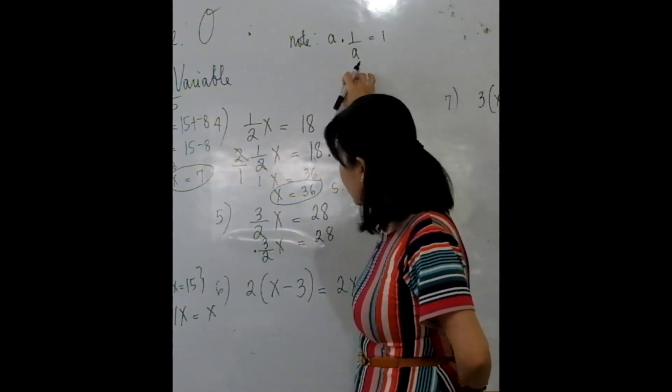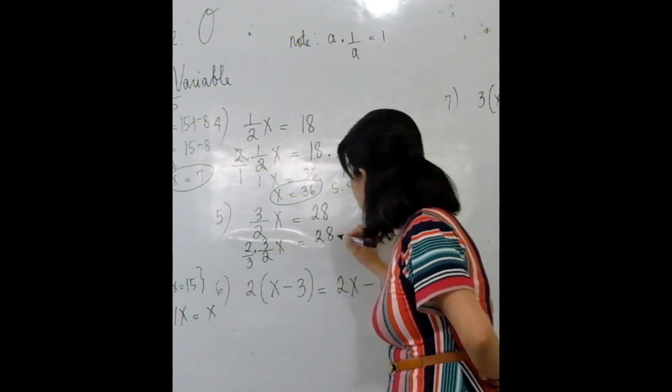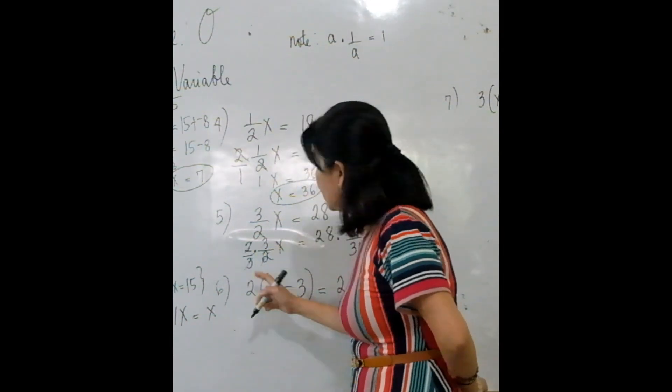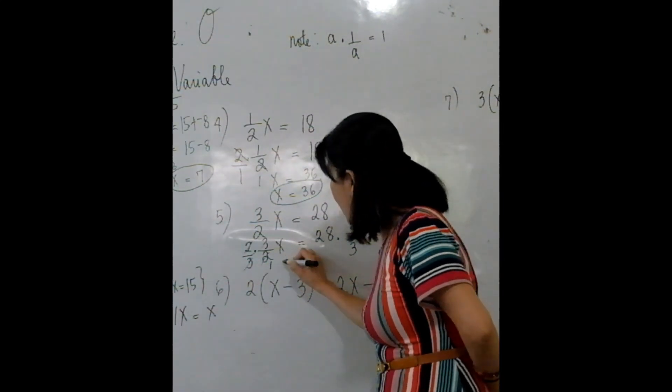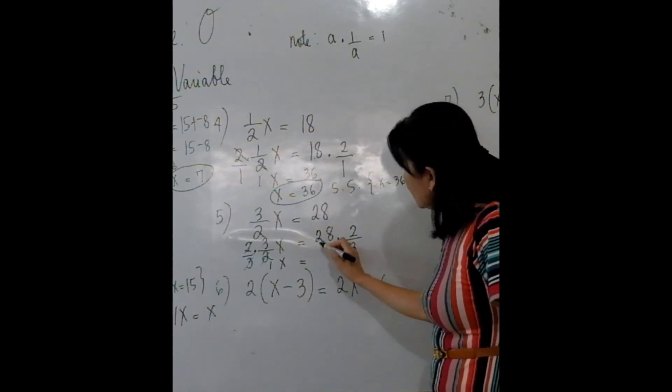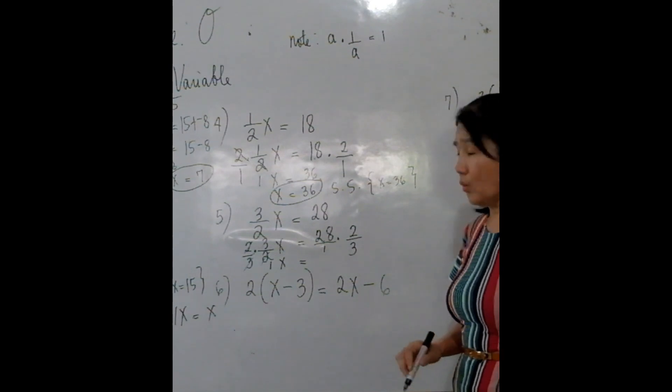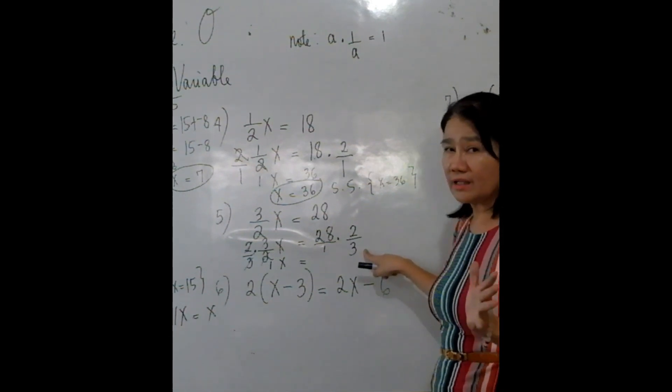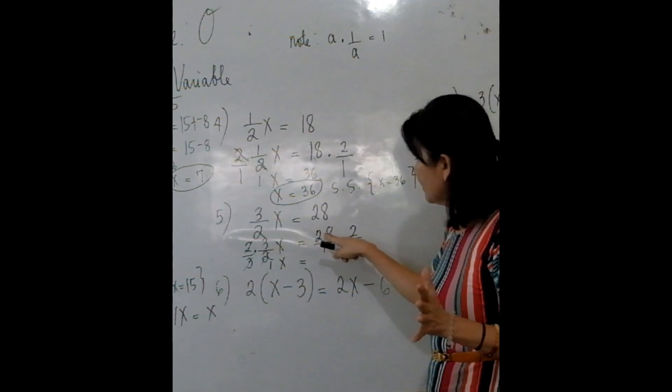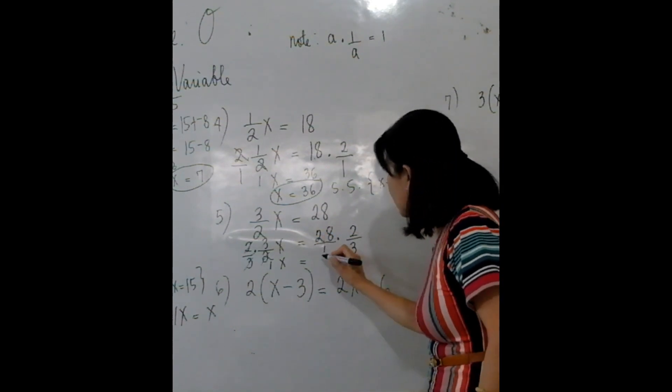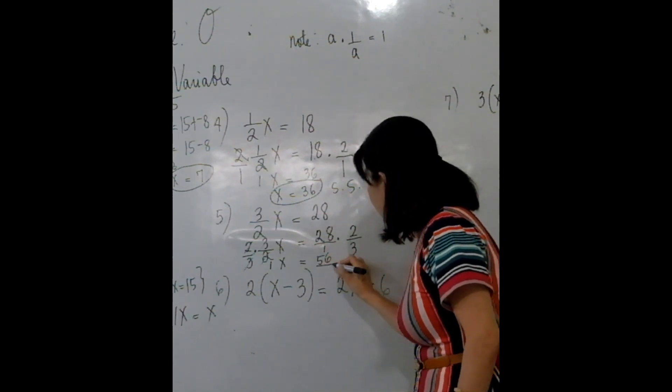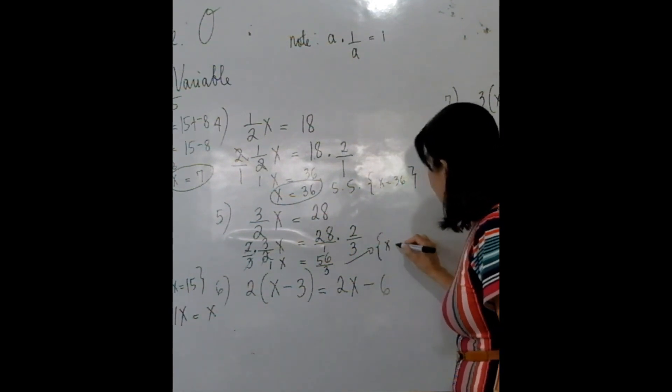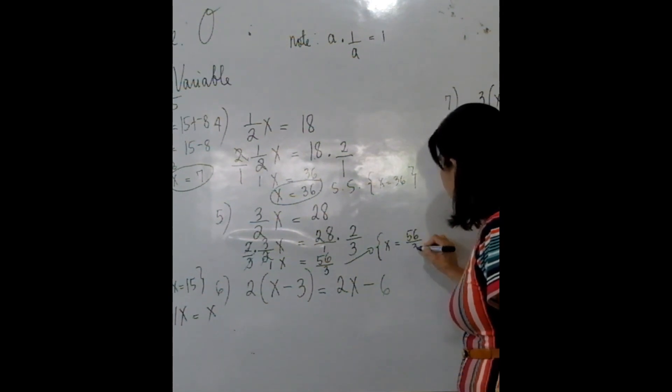Applying the multiplicative inverse property here, we multiply 2 over 3, 2 over 3 to both sides. So that this cancels or applying multiplicative inverse it will give us 1 times X equals... You know that 28 is 28 over 1. Is 28 divisible by 3? No, it's not. So you cannot cancel. So all we have to do is proceed by multiplying both the numerators: 28 times 2, 56 over 3. So we have here in our solution set X = 56 over 3.